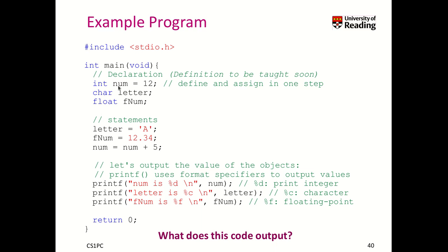And in the declaration block, we have a number, which is an integer, we have a letter, a character, and we have a floating point number. We do a little bit of assignment. Think about what it does for a moment. What does this output?